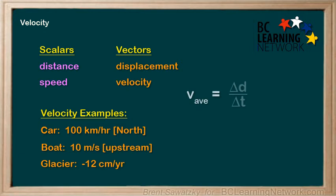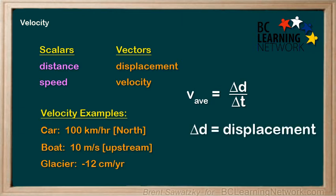And here's the equation we can use. The delta D is our displacement, or the change in position. Note that the triangle here is called a delta, and it just indicates the change. Delta T is the change in time — that is, the amount of time it took for the displacement. And in the front, we say V-AV to indicate that we're calculating an average velocity.